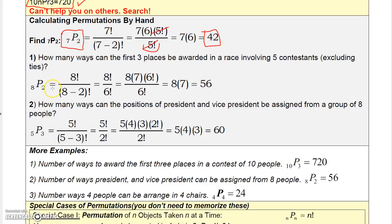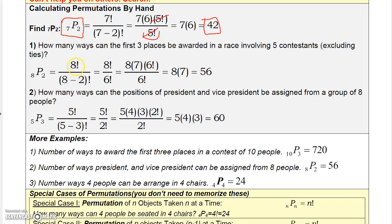Let's look at another couple more permutation problems. How many ways can the first three places be awarded in a race of five contestants? Now, again, we know this has to be a permutation problem for two reasons. Number one, repetition doesn't make sense. Joe is not going to get first place and second place, so that's out.